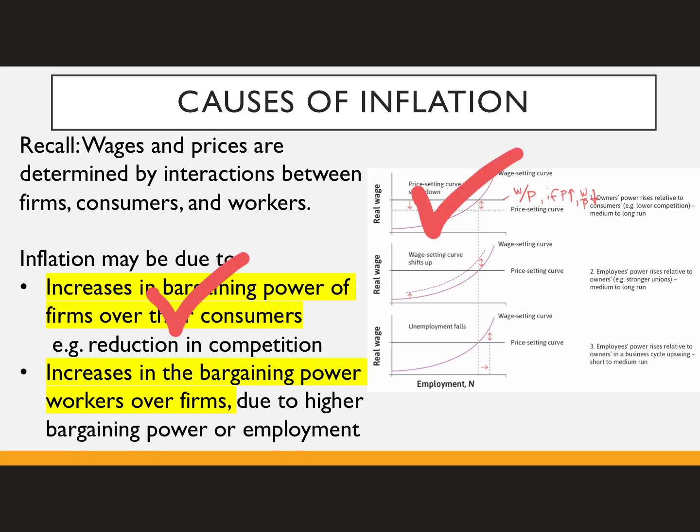Another source of inflation, besides firms charging high prices because of their market power, is if costs for firms rise — that's cost-push inflation. Prices rise from the producer's side, or wages pull up the cost of production, which forces costs up again. This is the idea of workers becoming more empowered versus firms, allowing them to get a higher wage.